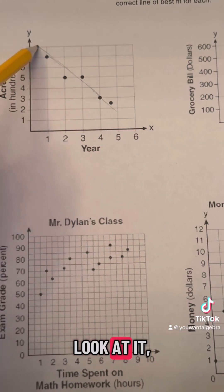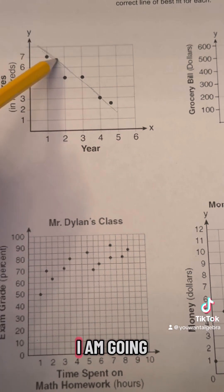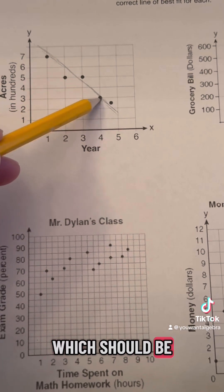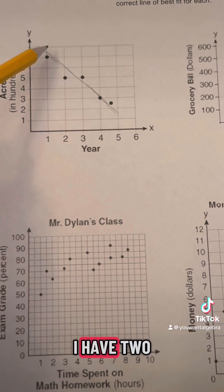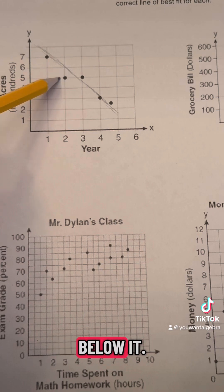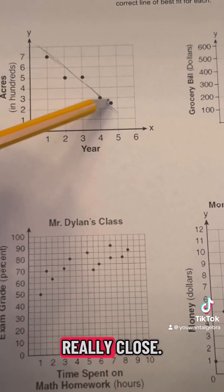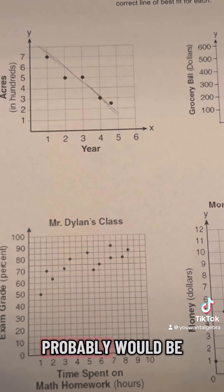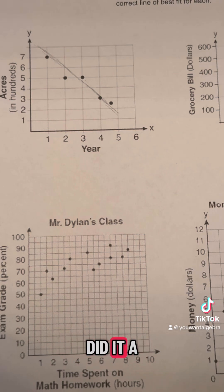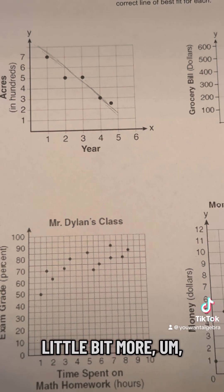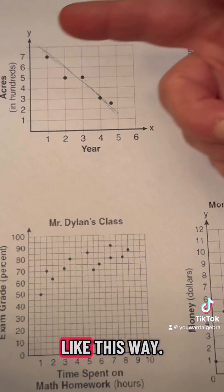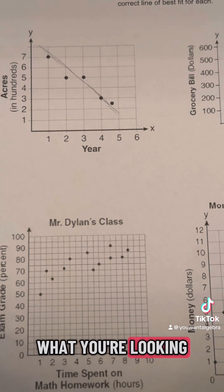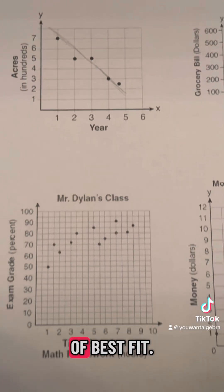I'm essentially looking for something like this. Where if I look at it, I am going through a point right here. I have two points that are below it and two points above it. These two are really close, these two are a little bit further away. Probably would be a little bit better if I did it a little bit more like this way. But for the most part, that's kind of what you're looking for when you're doing a line of best fit.